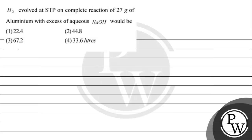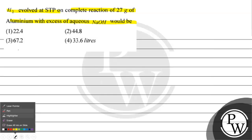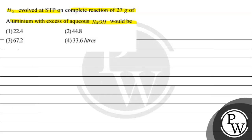Let's read this question. The question says: hydrogen evolved at STP on complete reaction of 27 grams of aluminium with excess of aqueous NaOH would be — option one: 22.4 liters, option two: 44.8 liters, option three: 57.2 liters, option four: 33.6 liters.